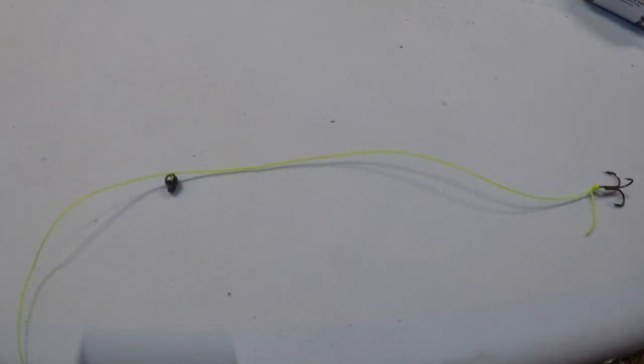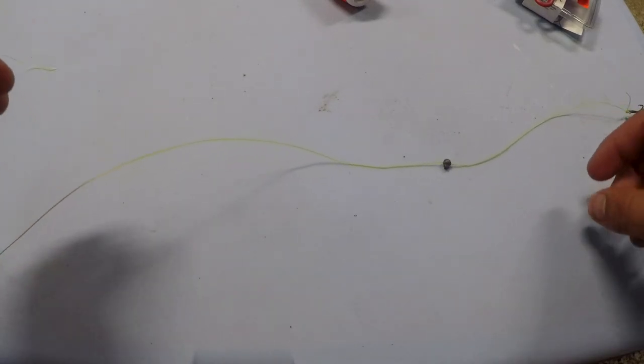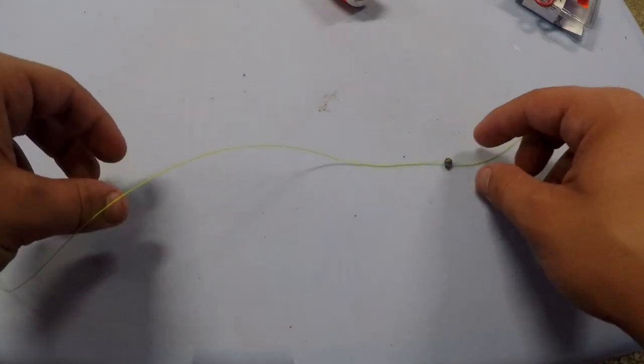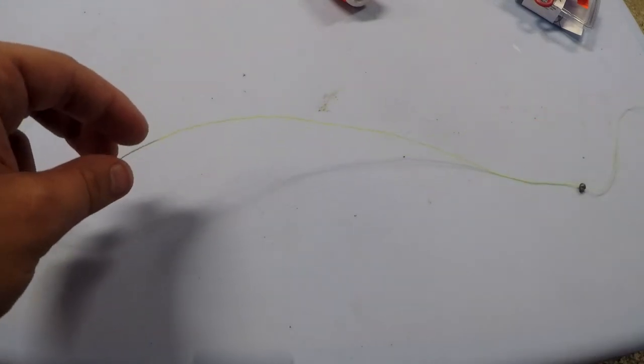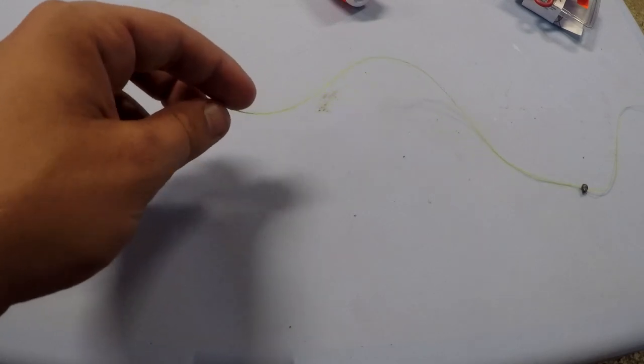Now the last thing we'll need to do is add a bobber. When you're placing a bobber, you need to kind of figure out where the fish are biting. Usually I put it at about two feet—that's a good area. Specks, if they're feeding on the surface, will definitely still go down and eat the shrimp two to three feet under.